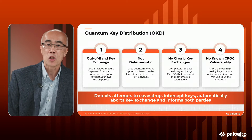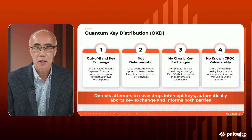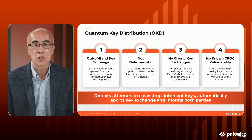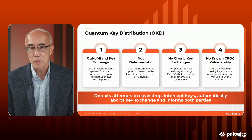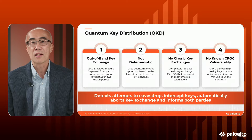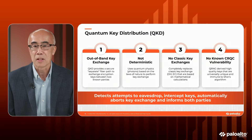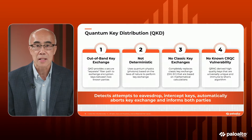Why this is so important is that these keys are based on the laws of quantum — the laws of nature — and they're not based on a mathematical formula that something like Shor's algorithm can break once data gets harvested. No classic key exchange is done with QKD. We don't use anything like Diffie-Hellman or elliptic curve. There is no known cryptographically relevant vulnerability with this technology. It is based on the laws of nature, and we believe it to be completely sound and foolproof against a quantum attack.